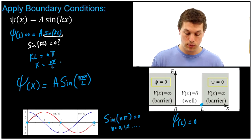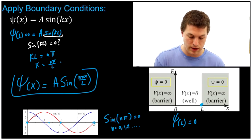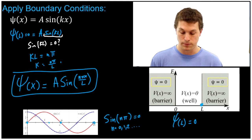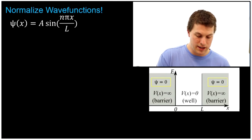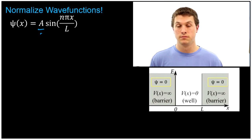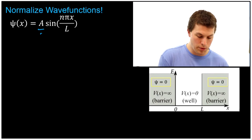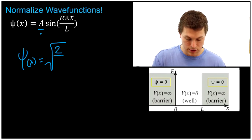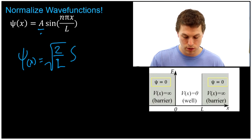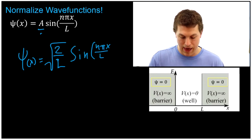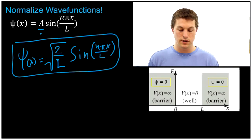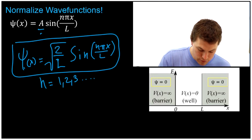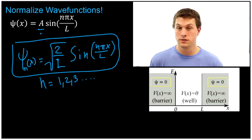We've applied both boundary conditions and now have a very specific wave function. We still don't know A, and that's determined by normalization. If you normalize this wave function — I'll link to a video below where I go through that — you get A = sqrt(2/L). So our final wave function is psi(x) = sqrt(2/L) · sine(n·pi·x / L), where n can be 1, 2, 3, and so on — giving an infinite number of wave functions.